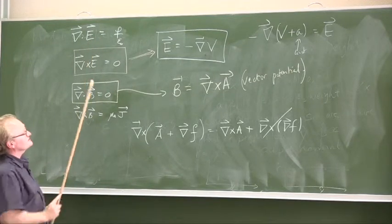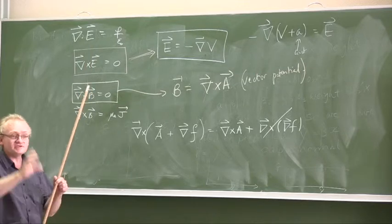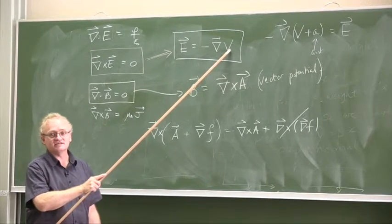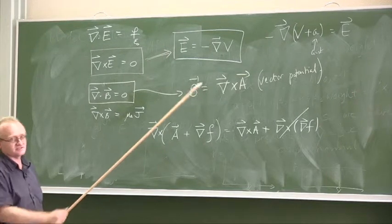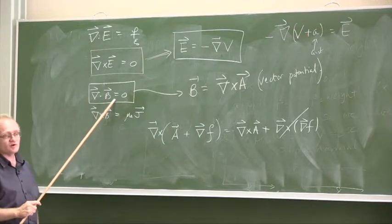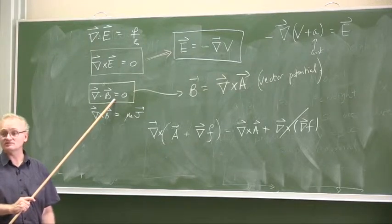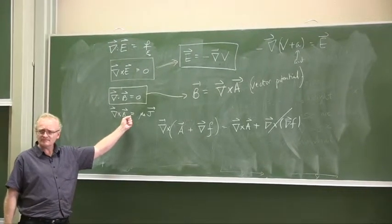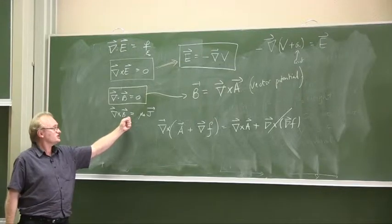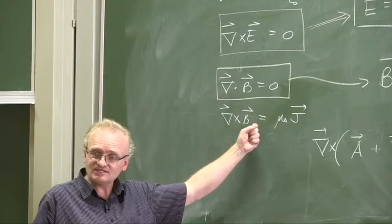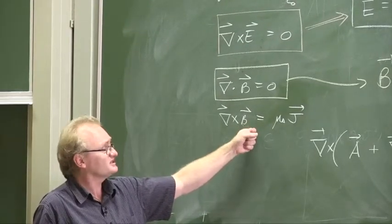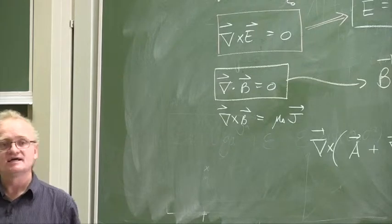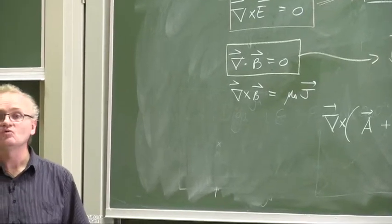Previously we traded the electric field, which was a vector field - three functions at each point in space - for a single scalar field. That looked like a good trade. Here it looks like we've traded a vector for a vector. But the first thing is: we don't have to worry about the divergence equation anymore - that equation is automatically solved. The only equation we have to worry about solving is Ampere's law. So what I would like to do is rewrite Ampere's law substituting in that B is the curl of A. What equation do we get for A?